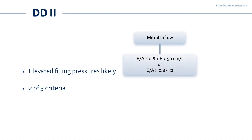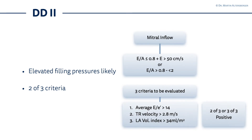The next situation to know is Diastolic Dysfunction Grade 2. In this case we also have elevated filling pressures, but we have a more complex decision tree to follow. We start again with the mitral valve inflow. We need an E to A ratio above 0.8 and below 2, so up to 1.9. The second situation is an E to A ratio at or below 0.8 but an E wave above 50 centimeters per second. After that, we have three criteria to evaluate. Those three criteria are the average E to E prime ratio — we measure the maximal E velocity, the maximal E prime velocity medial and lateral (septal and lateral) — and combine those two measurements to calculate the mean average E to E prime.